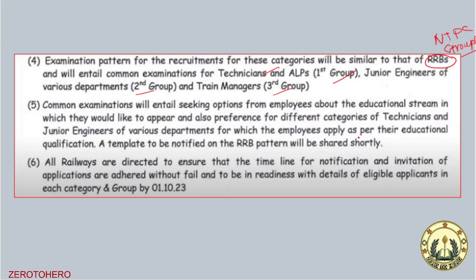Employees will prepare for different categories of Technician and Junior Engineer across various departments, for which they apply as per their educational qualification — 10th level or diploma or other qualification. All railways are to ensure that the timeline for notification and invitation of applications are met with detailed eligible applicant lists for each category, by 1st, 10th, 22nd, 23rd.